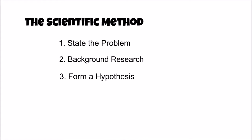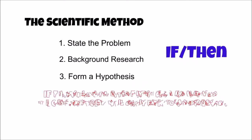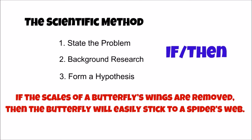In science classrooms, the hypothesis is often written as a formal if-then statement to make the hypothesis easy to test experimentally. For example, the butterfly scale hypothesis could be written as if the scales of a butterfly's wings are removed, then the butterfly will easily stick to a spider's web.